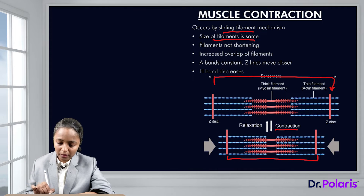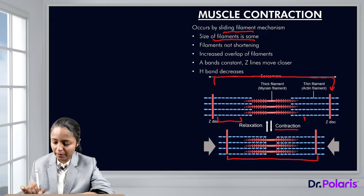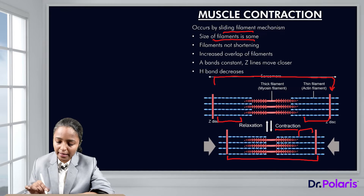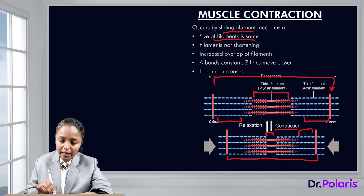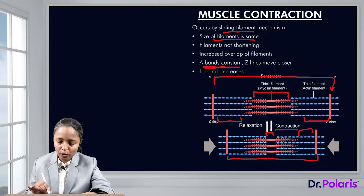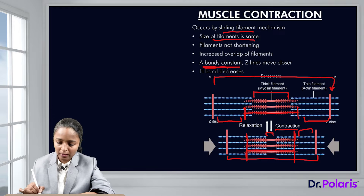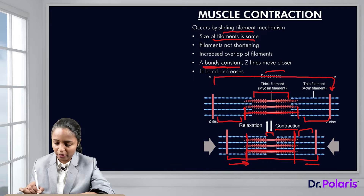The I bands, which are formed by actin filaments, troponin, and tropomyosin, have shortened. The H zone, where we see only thick filaments and no overlap, is actually shortening. But the A bands remained constant — the A band is basically the entire thick filament region. In short, Z-lines are moving closer to each other.